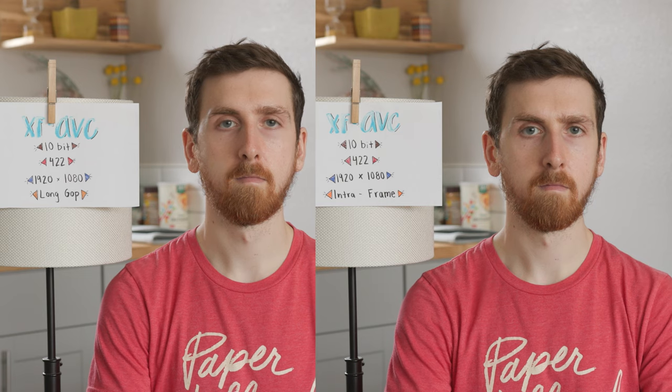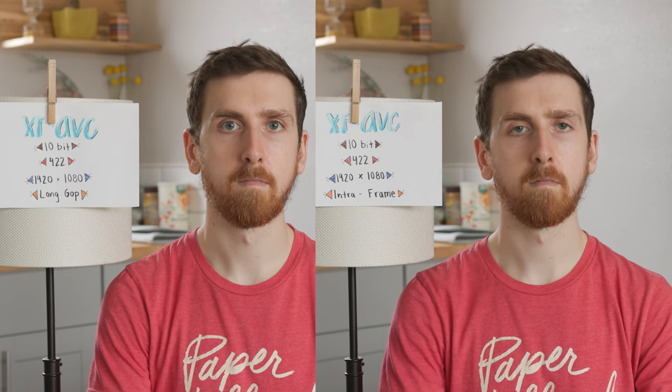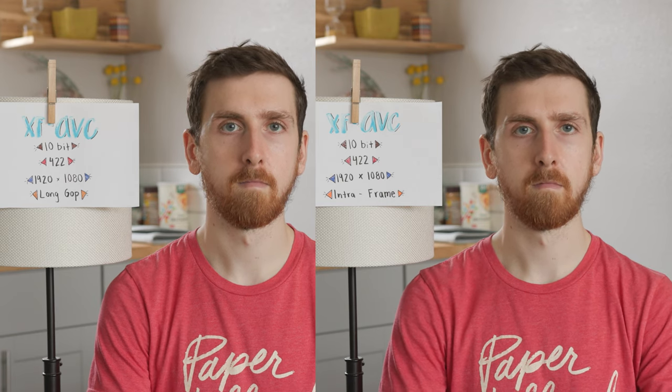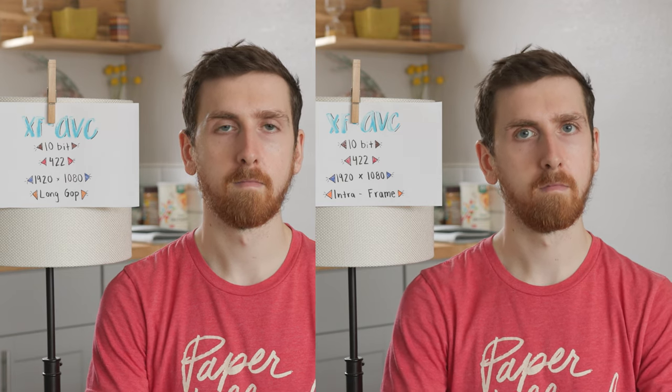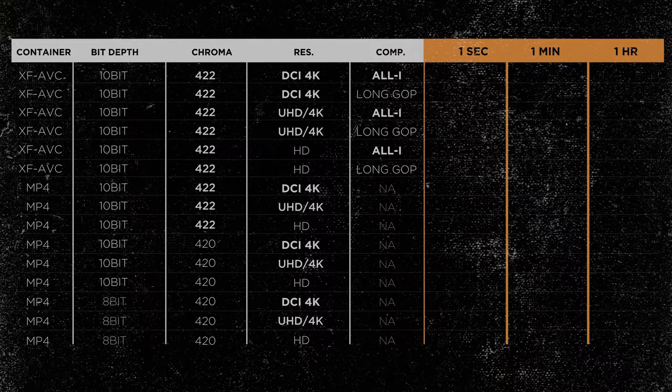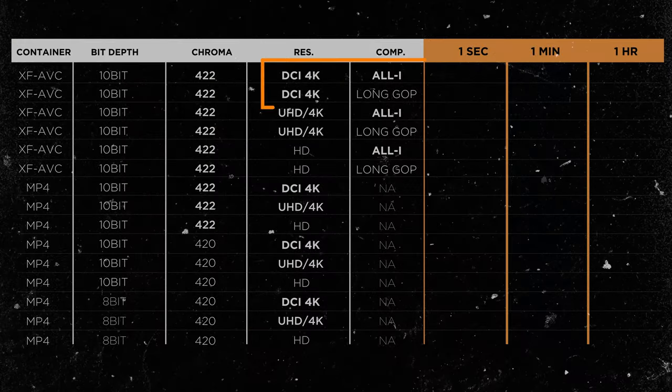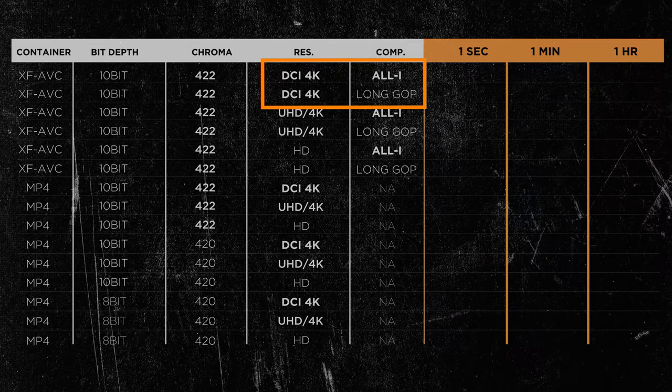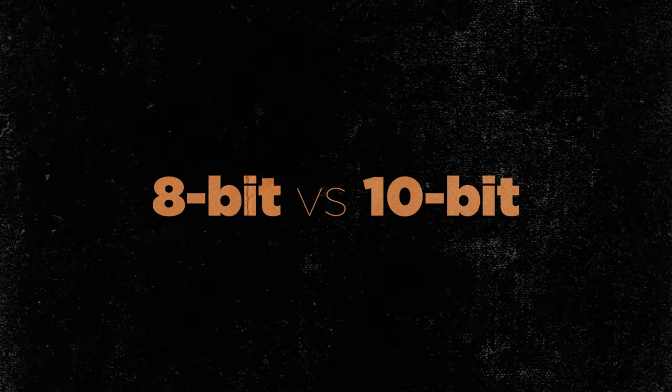There are also some small quality differences between the Longgop and the All-I. The compression type in a static talking head shot — I don't see any difference. But I know that if I was filming a scene with a lot of motion and a lot of small details, Longgop can apparently produce artifacts. But once you see the results of the file sizes between these two, you're going to have a tough decision to make.